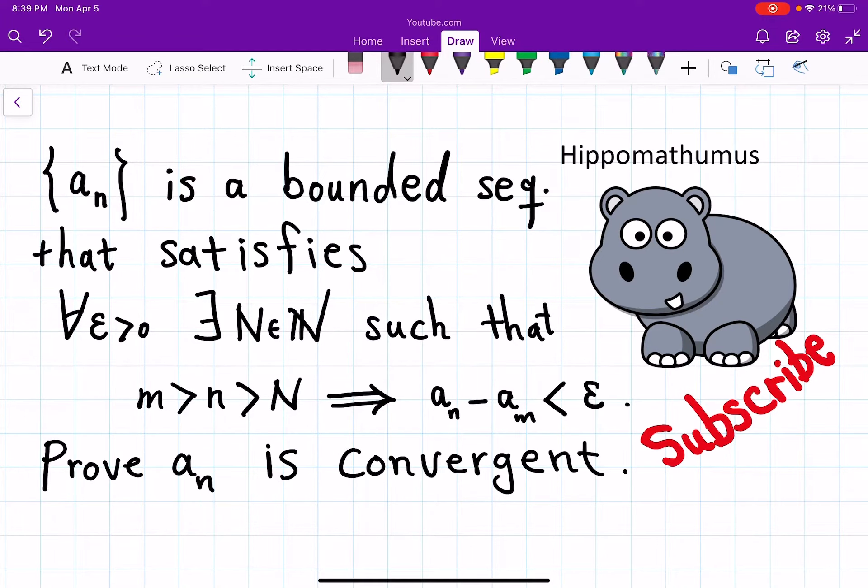So {aₙ} is a bounded sequence which implies that it's a real sequence that satisfies the following condition. For every epsilon positive, there is a natural number N such that for all indices bigger than N, aₙ minus aₘ which comes later than aₙ is less than epsilon.